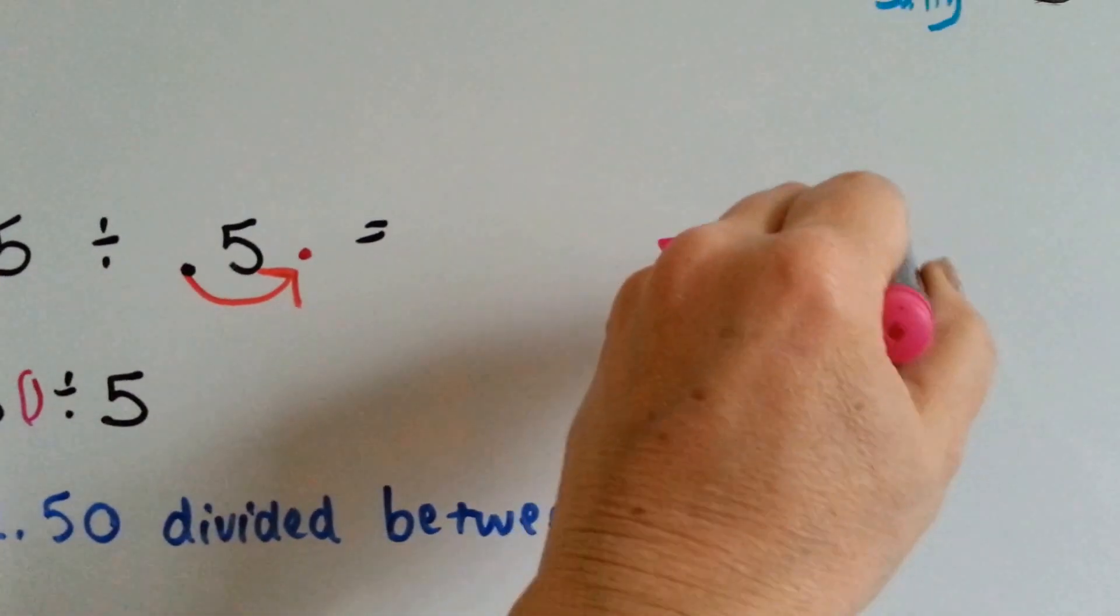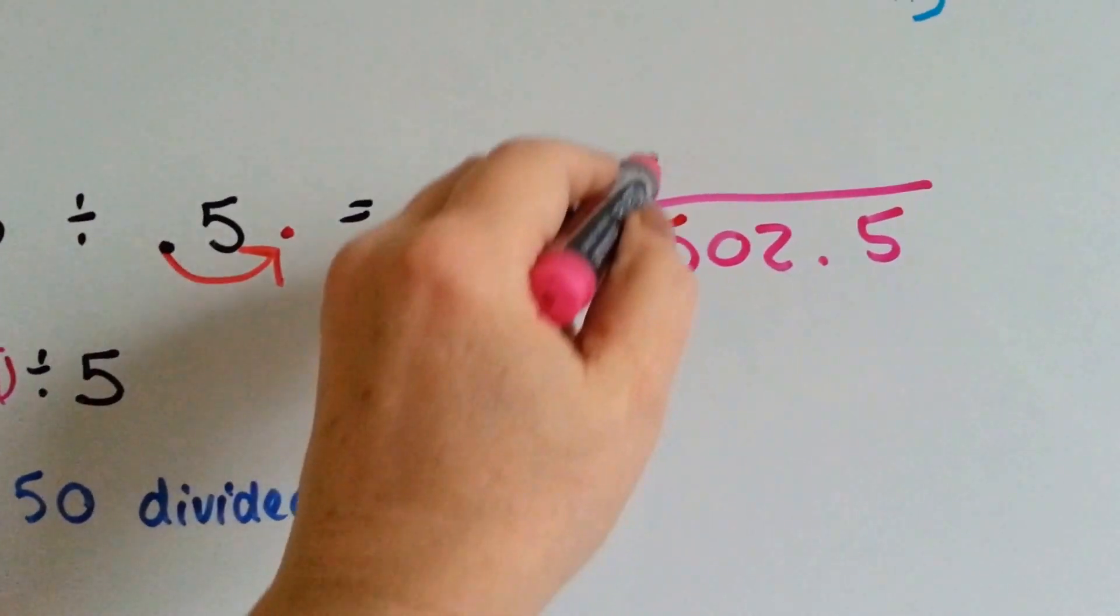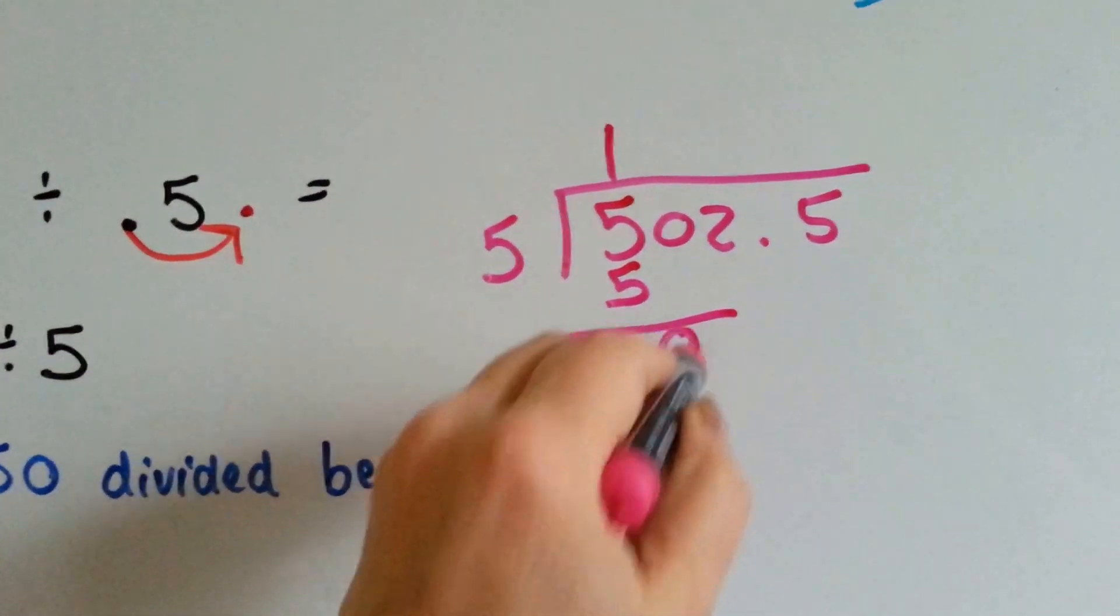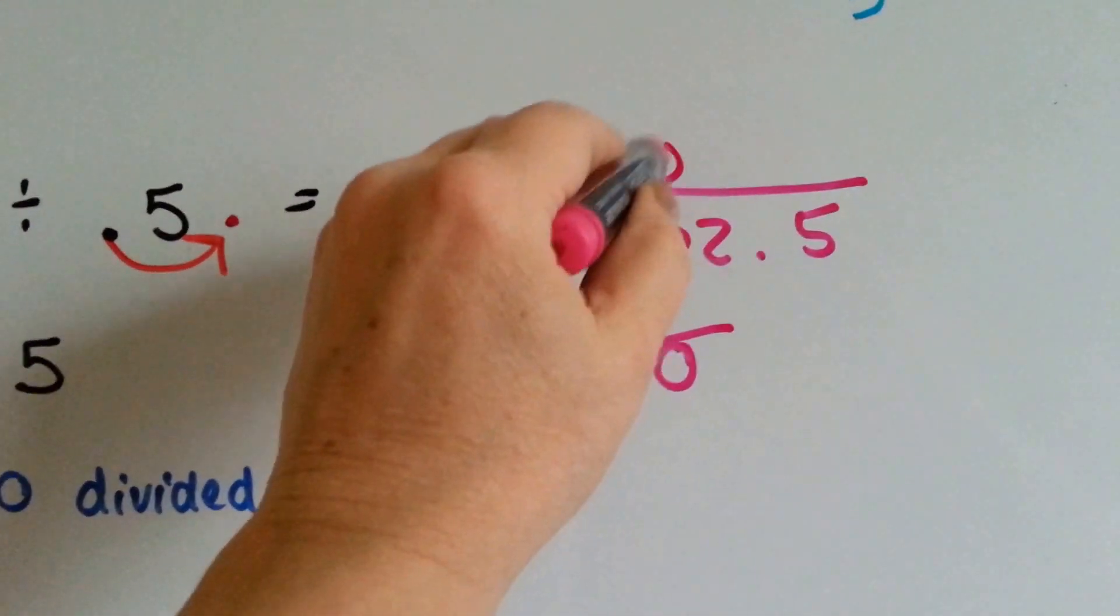So, 502 divided by 5: five goes into five one time, one times five is five. Now, it's the zero's turn to come down. How many fives go into zero? None. So we put a zero up here.